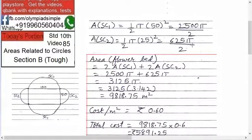Now area of flower bed is 2 into SC1 plus 2 into SC2. So when you multiply by 2, 2 goes from below. So 2 times area of SC1 plus 2 times area of SC2. Just add them: 2500 π plus 625 π.